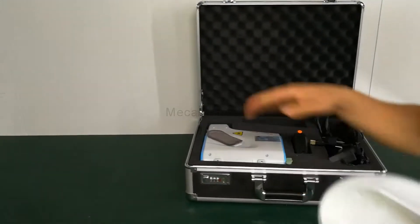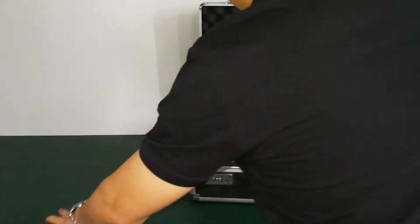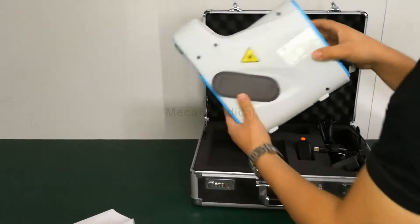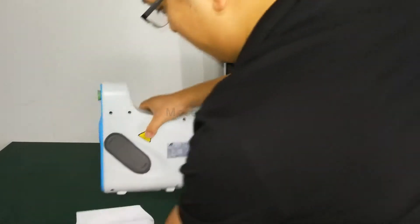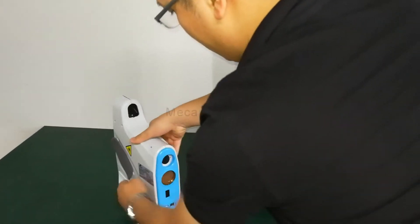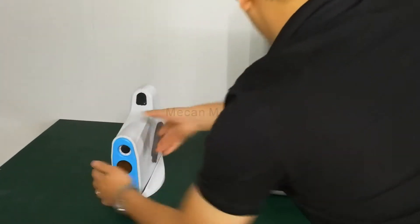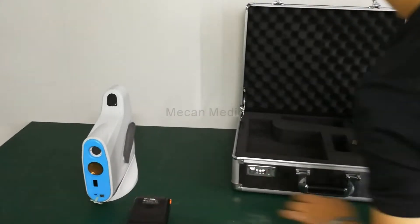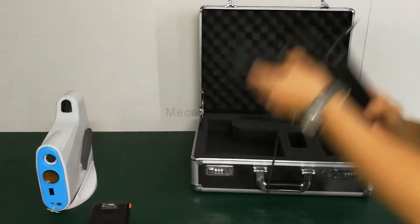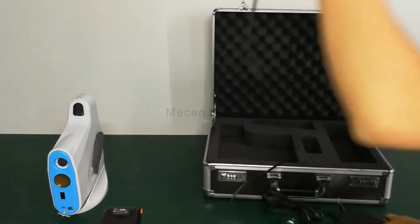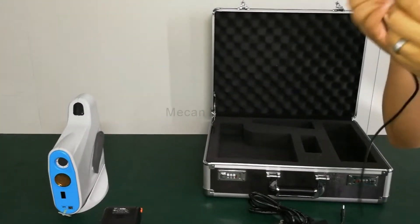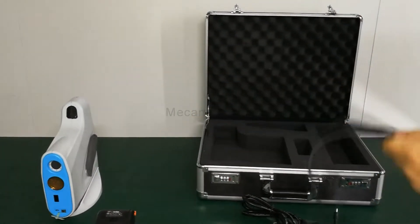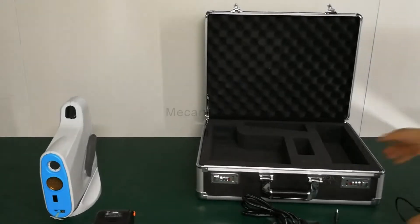Now I will show you this machine. That is the hood, that is the main machine, like this, and that is the printer. That is the power cable, that is the data cable to transfer the data to the computer, and that is the case.